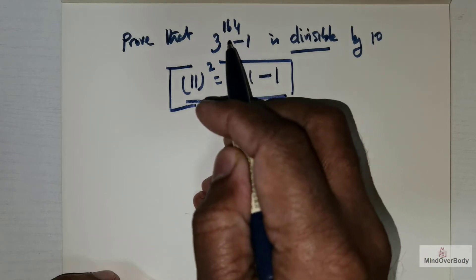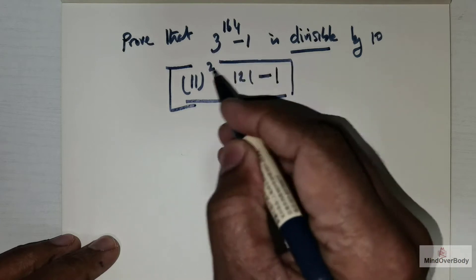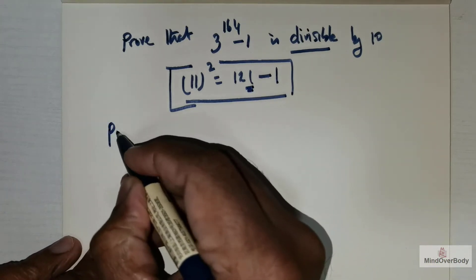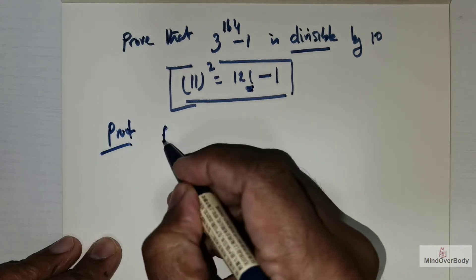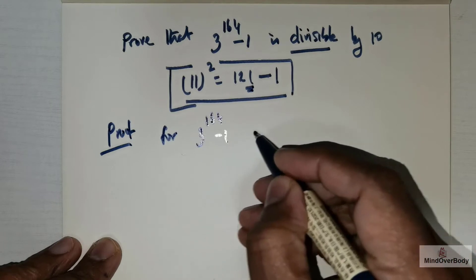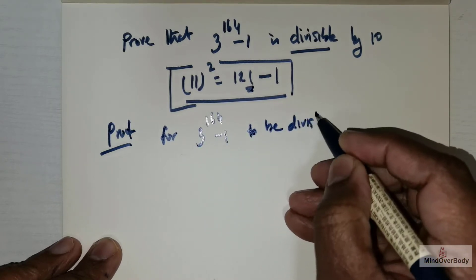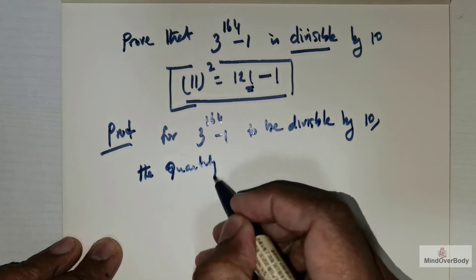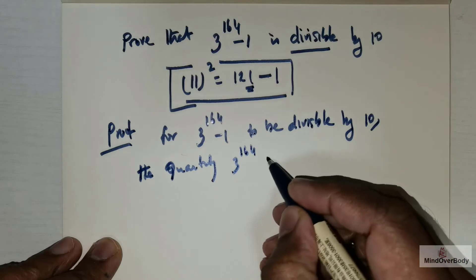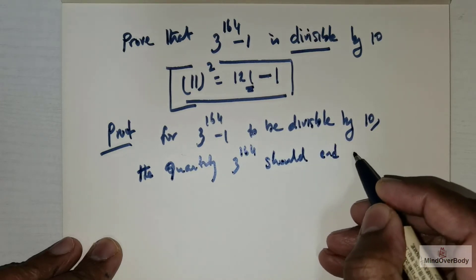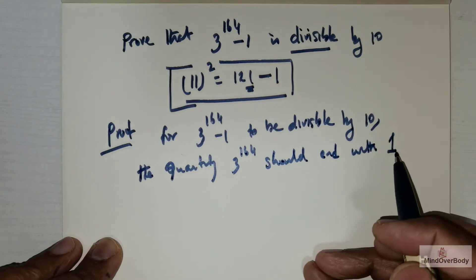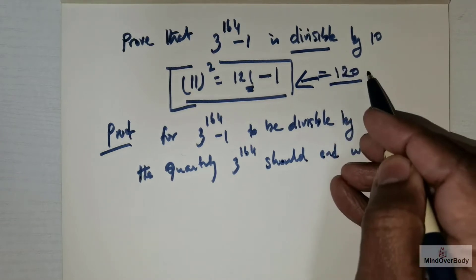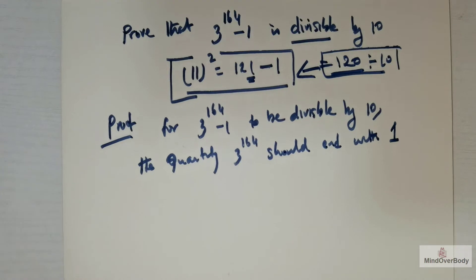So that is the idea behind solving this particular question. We will be able to solve this question only if the quantity 3 raised to the power 164 ends with the digit 1. So I am giving you the proof: 3 raised to the power 164 minus 1 is divisible by 10 only when 3^164 ends with 1, because only then can I remove that 1 away and get a value divisible by 10.